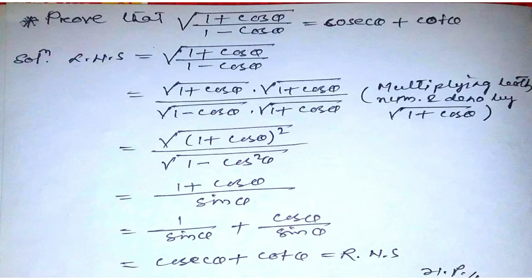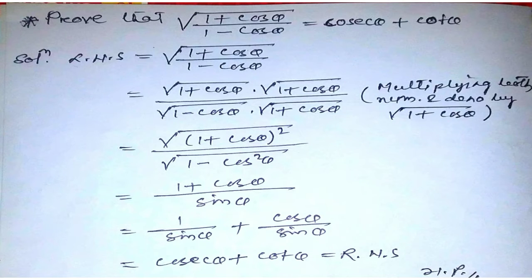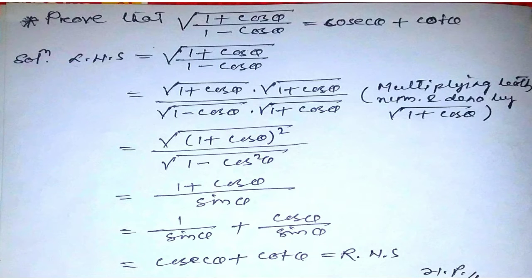Solution: Left hand side equals √((1 + cosθ)/(1 − cosθ)). We multiply both numerator and denominator by √(1 + cosθ), giving us √(1 + cosθ) × √(1 + cosθ) in the numerator, which equals √((1 + cosθ)²), and in the denominator √(1 − cosθ) × √(1 + cosθ).